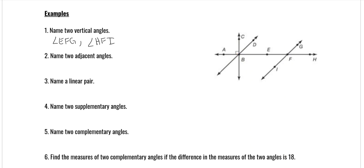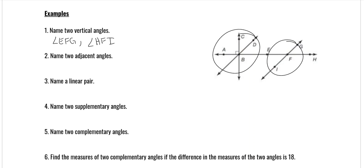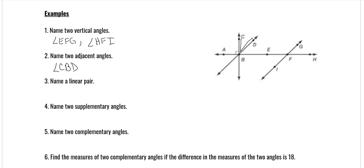Name two adjacent angles — there are lots of those too. Pick two. Remember, adjacent just means that they're next to each other. There are a ton of them, so just pick any two that share a common ray. I'm going to pick angle CED and angle DBE.